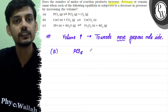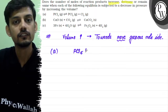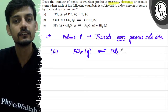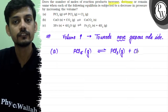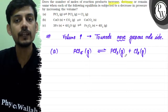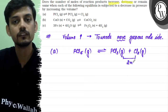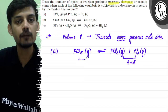The first reaction is: PCl5(g) reversibly gives PCl3(g) and Cl2(g). On the product side, there are a total of 2 moles of gas, and on the reactant side, there is a total of 1 mole of gas.